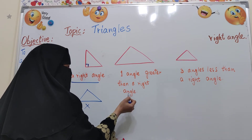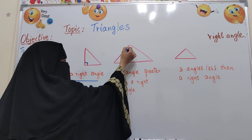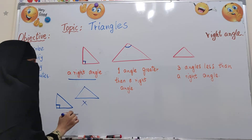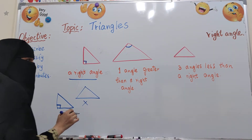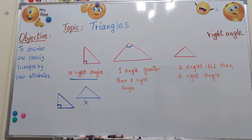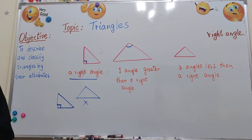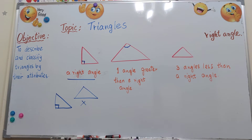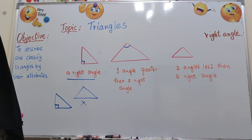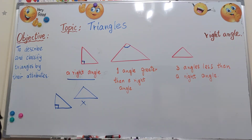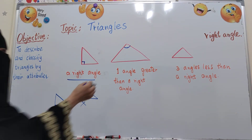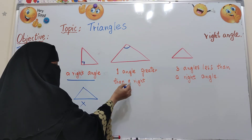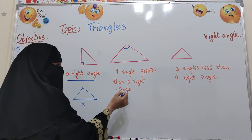The next type has one angle greater than a right angle. In our previous lesson I showed you a greater than right angle and less than — that is acute. Here, one angle is greater than a right angle.